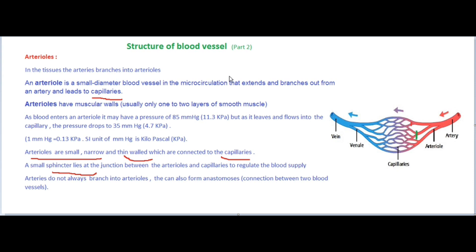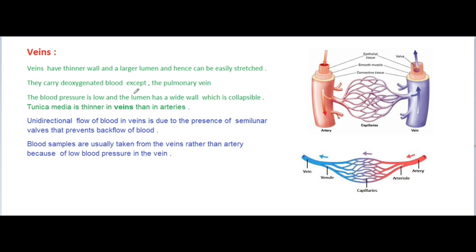Next we can see veins. Veins have thinner walls and a larger lumen and hence can be easily stretched. Their function is to carry deoxygenated blood, except pulmonary veins. Here in the picture you can see arteries, veins, and capillaries.